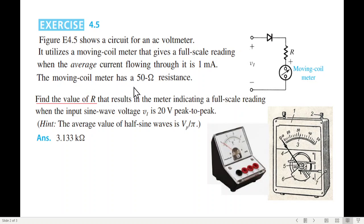The meter, the moving coil has a resistance of 50 ohm. So this moving coil has an internal resistance of 50 ohm and there is a resistance of value R is added.